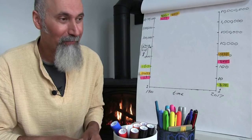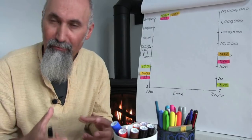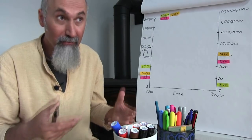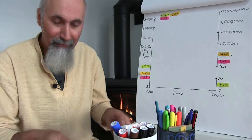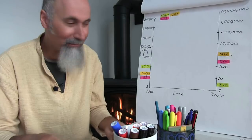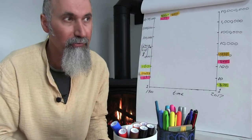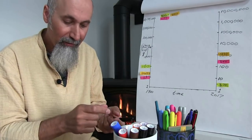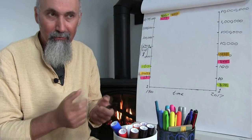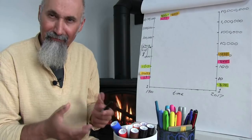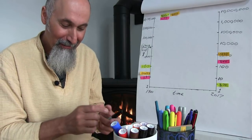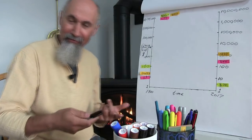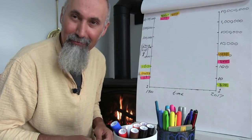Some people take magnets and go to thrift stores. They take anything that's gold-colored and put a magnet to it. If it doesn't stick, they buy it, because gold is not magnetic — it's not ferrous. If the magnet doesn't stick and it's really gold-colored, then it might be gold. That's one way you could go searching for treasure.